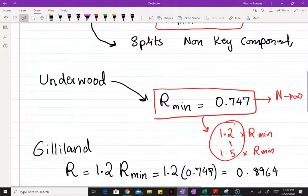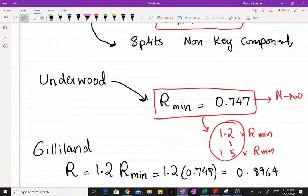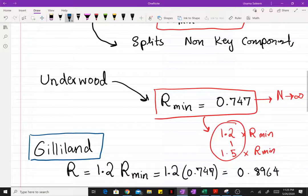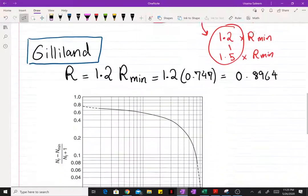Okay, so now once you have the operating reflux ratio, you can use the Gilliland correlation to find the theoretical number of trays, the theoretical number of stages associated with that reflux ratio.